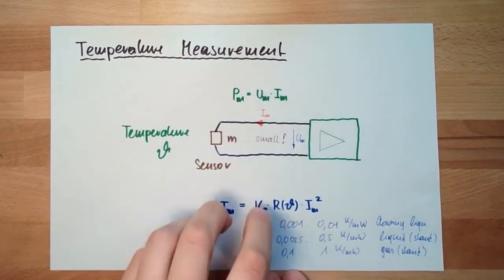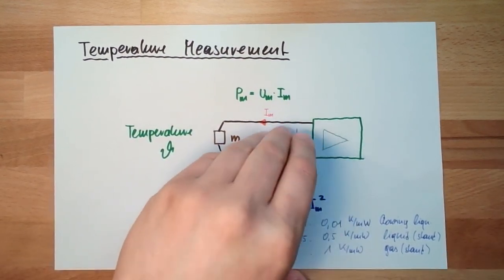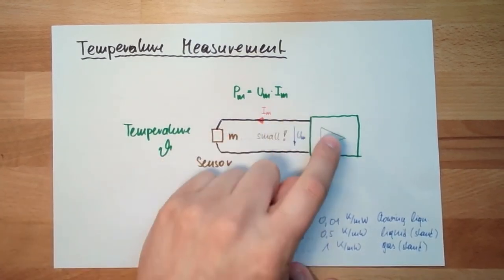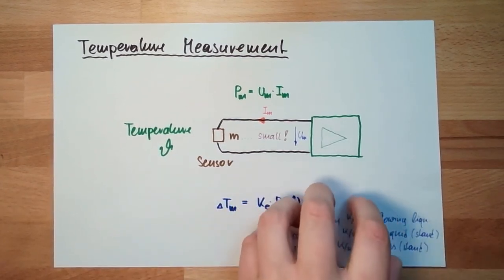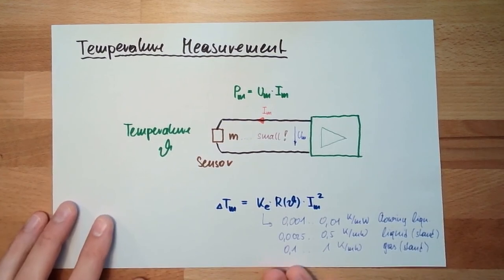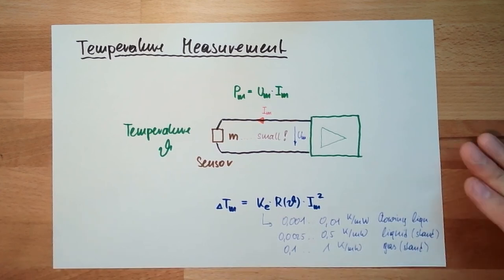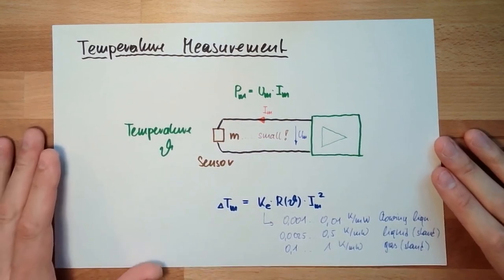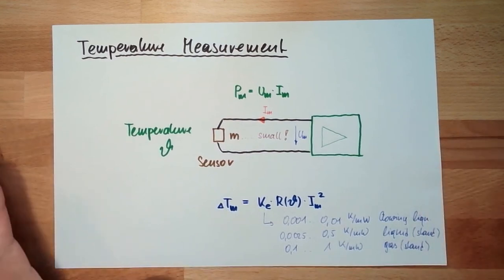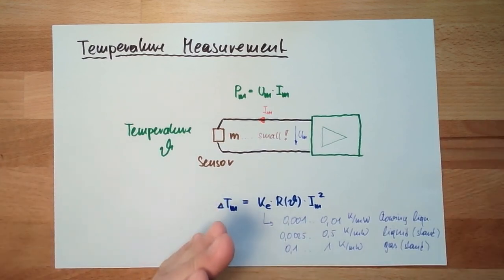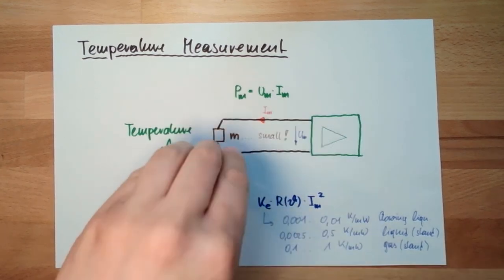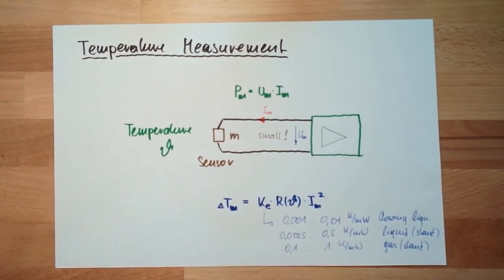So these two things, the mass of the sensor, which shall be small to influence less, and of course, the measurement current shall also be small. But for really accurate measurements, I can calculate this out. So these are systematic errors of my temperature measurement. So this is temperature measurement and the common errors which I'm handling here. Self-warming, and of course, the mass of the sensor, which needs to be brought to the same temperature. Because we really measured the temperature of the sensor and not the temperature we're interested in.